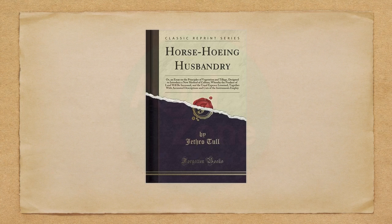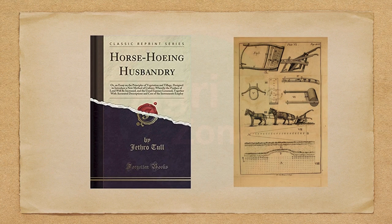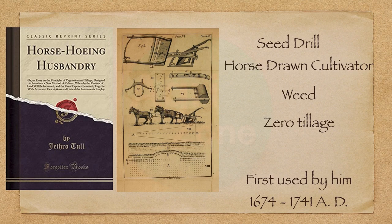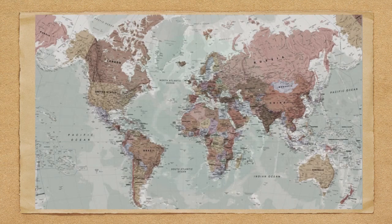Later on, the Horse-Howing Husbandry book was written by Jethro Tull, which described a horse-drawn cultivator. In his book, many agricultural terms are used: seed drill, horse-drawn cultivator, weed, and zero tillage. These were first used by him during 1674 to 1741 AD.